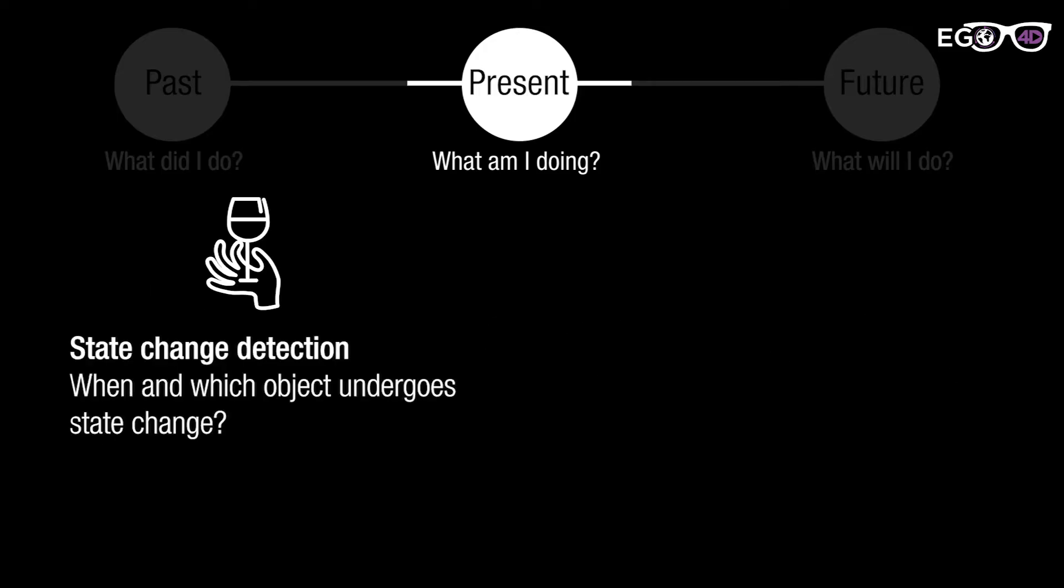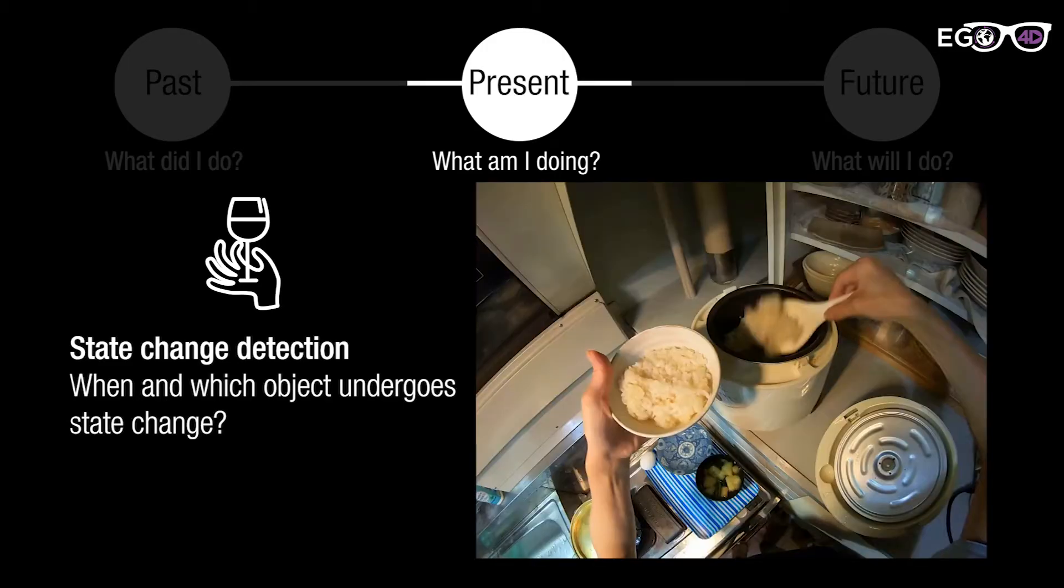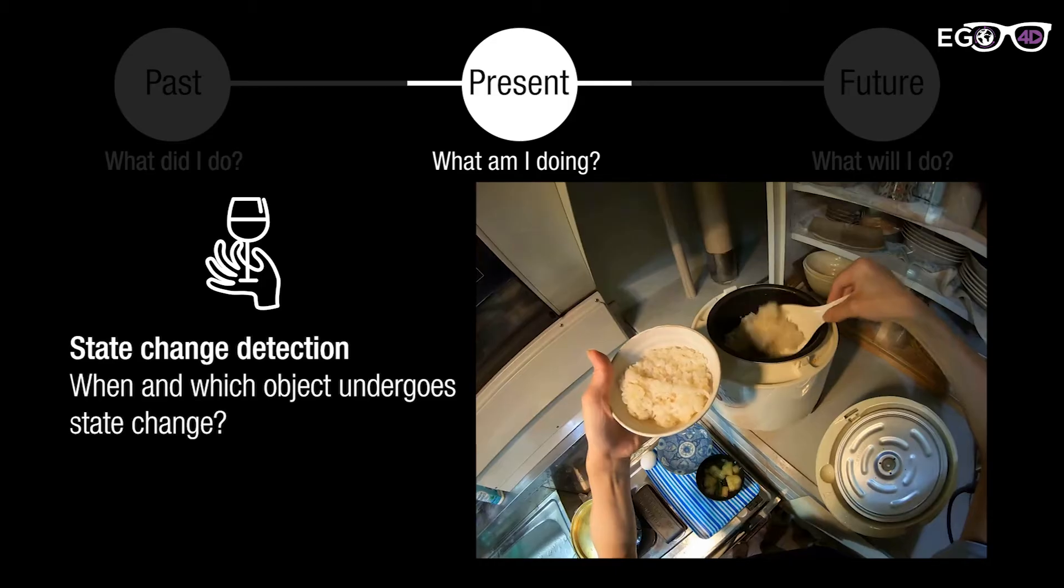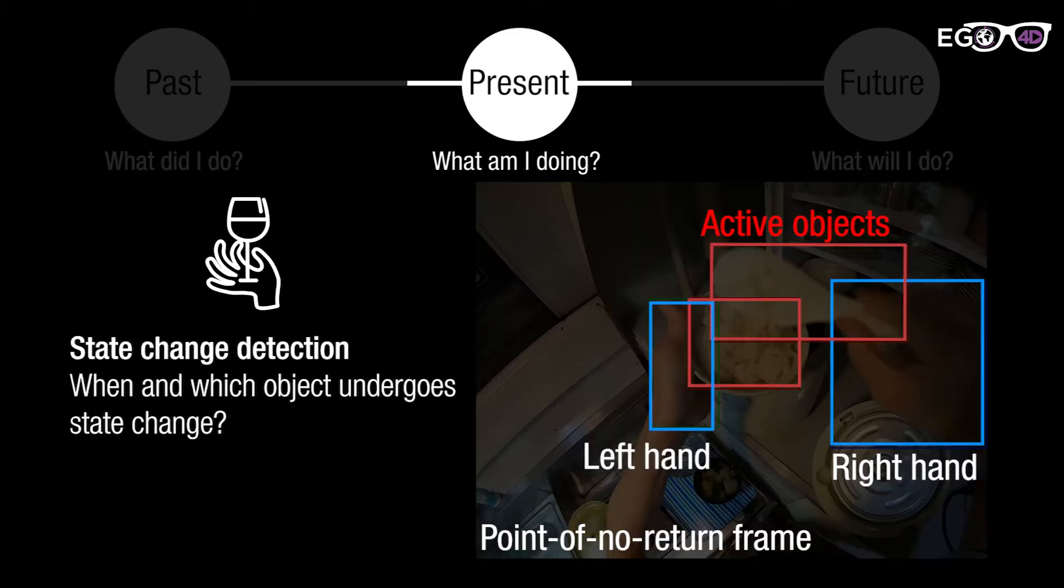For hand-object interaction, we identify the state change of an object induced by object-hand interaction. For instance, a person is about to put the rice in the bowl. The state change of bowl and rice occurs at the moment that the rice contacts with the bowl. We call this moment of state change as point of no return frame.